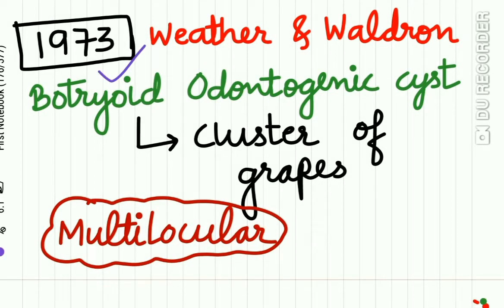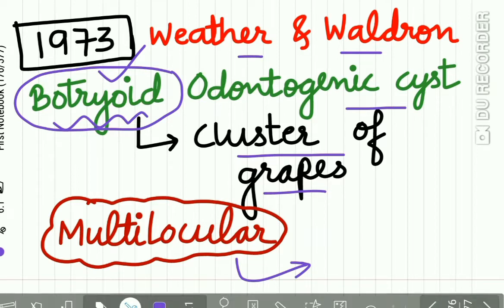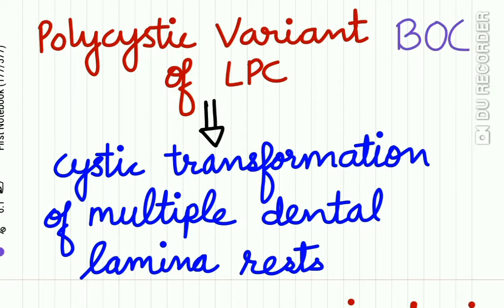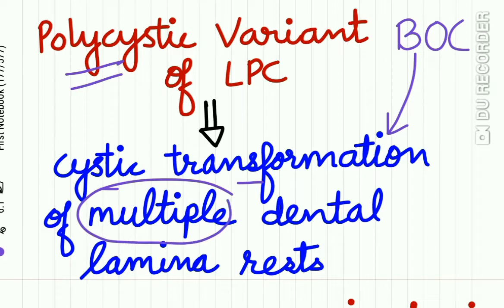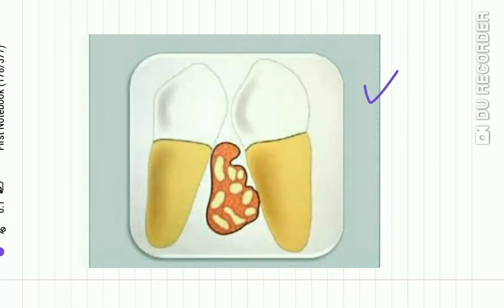In 1973, Weathers and Waldron described a separate entity called the Botryoid Odontogenic Cyst. The word 'botryoid' means cluster of grapes. This odontogenic cyst is multilocular and resembles a cluster of grapes. The Botryoid Odontogenic Cyst is the polycystic variant of the lateral periodontal cyst and originates due to cystic transformation of multiple dental lamina rests. Here in this pictorial diagram you can see a multilocular Botryoid Odontogenic Cyst.